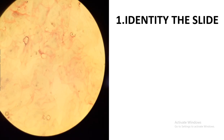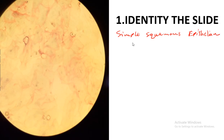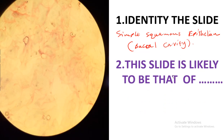The next slide: identify the slide. This slide is coming from the buccal cavity, and since it's coming from the buccal cavity you can say this is simple squamous epithelium. In case your lecturer wants you to specify a location rather than the epithelium type, you can say buccal cavity or mouth.